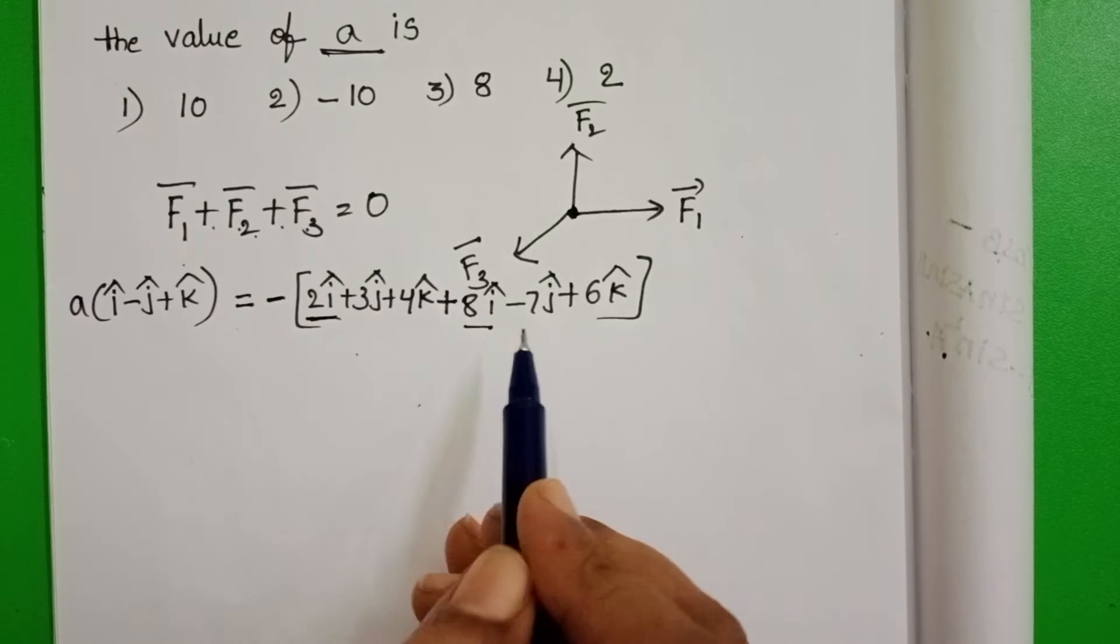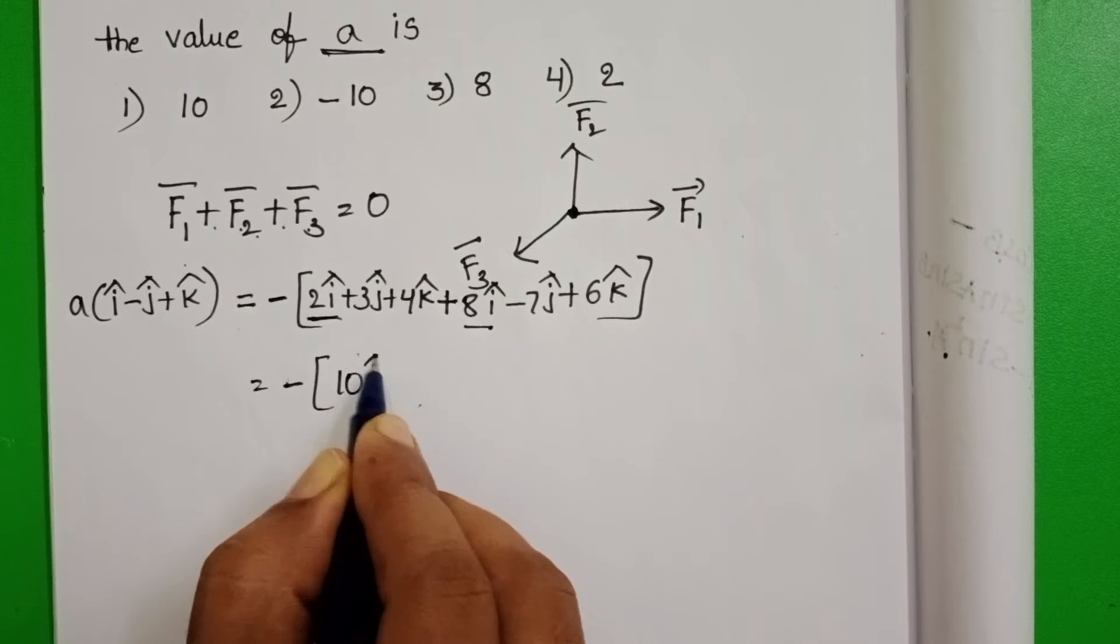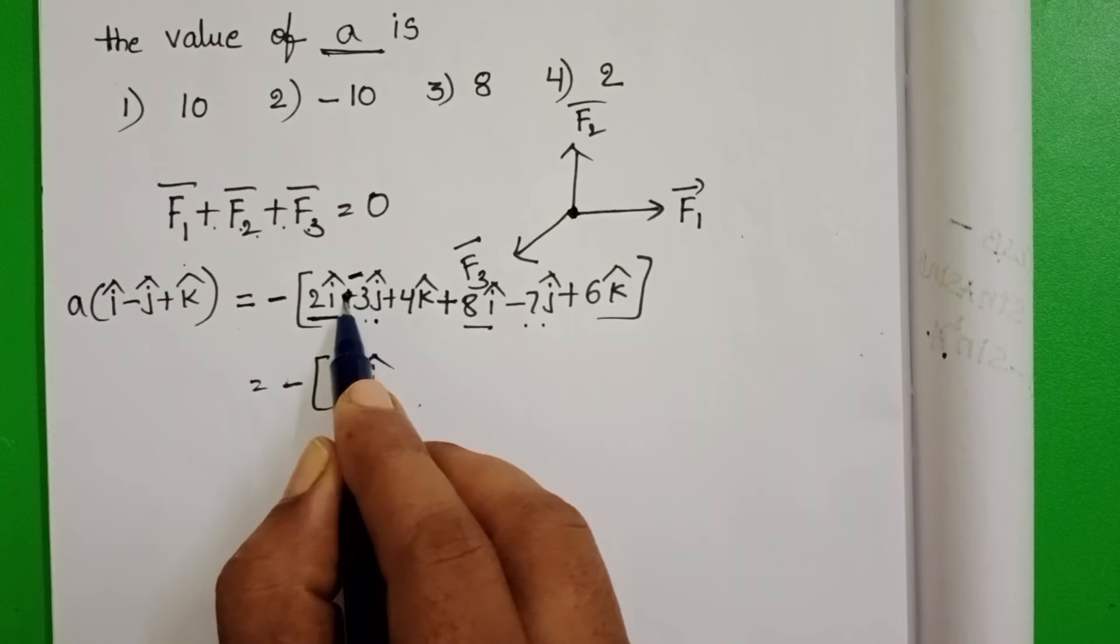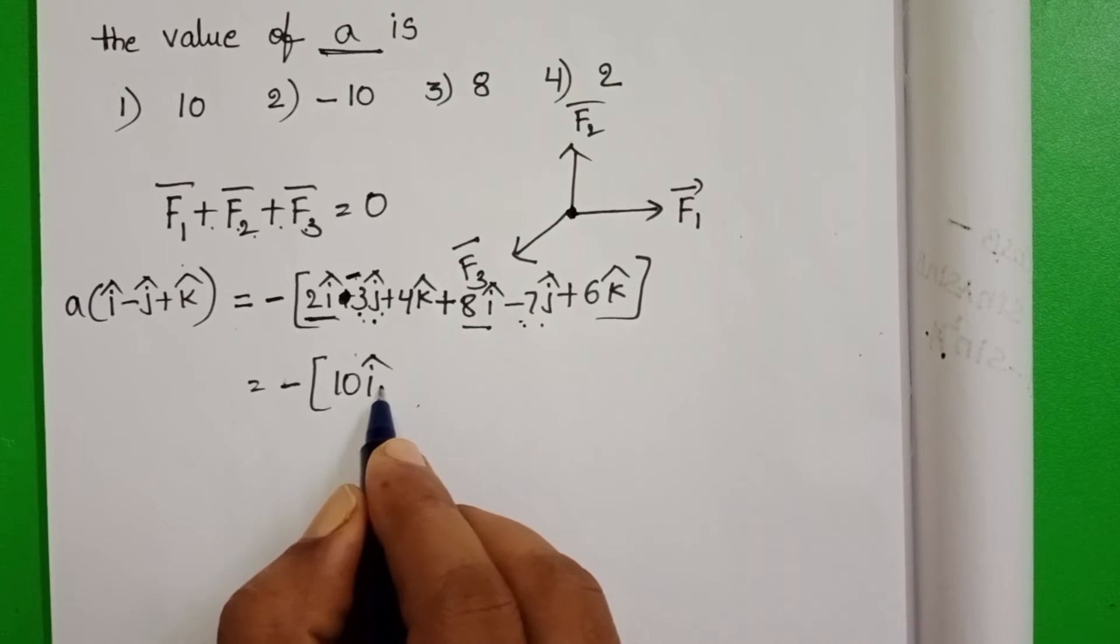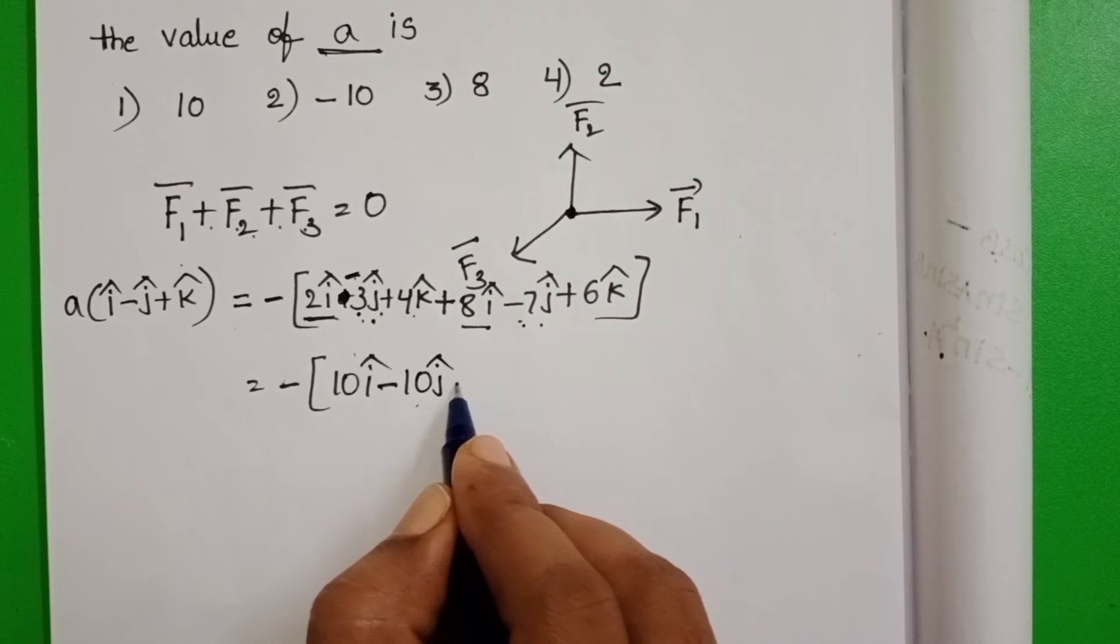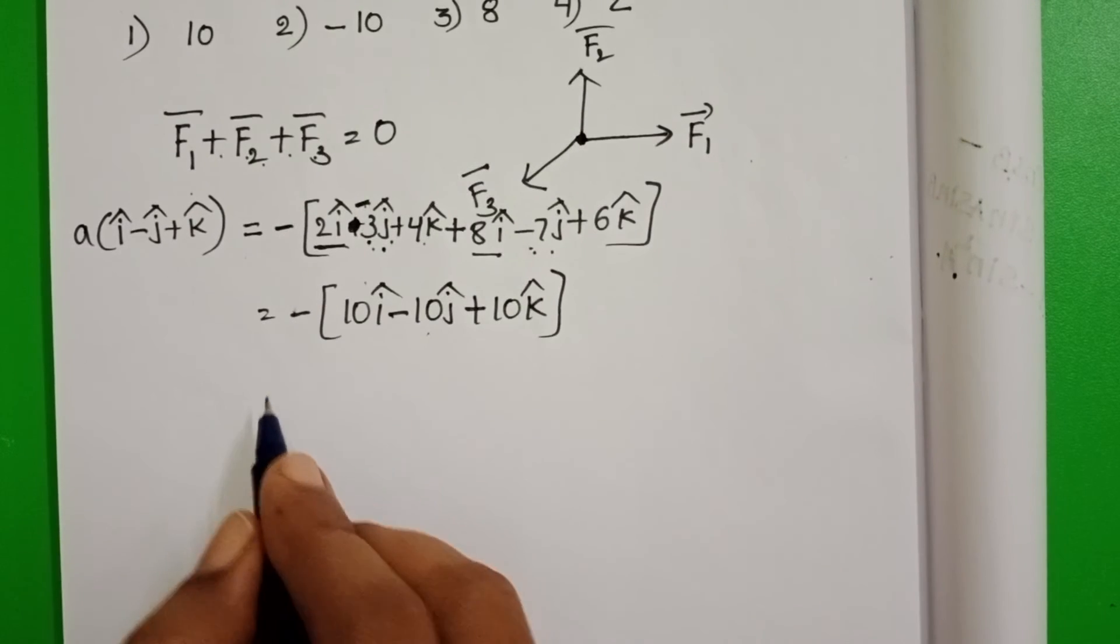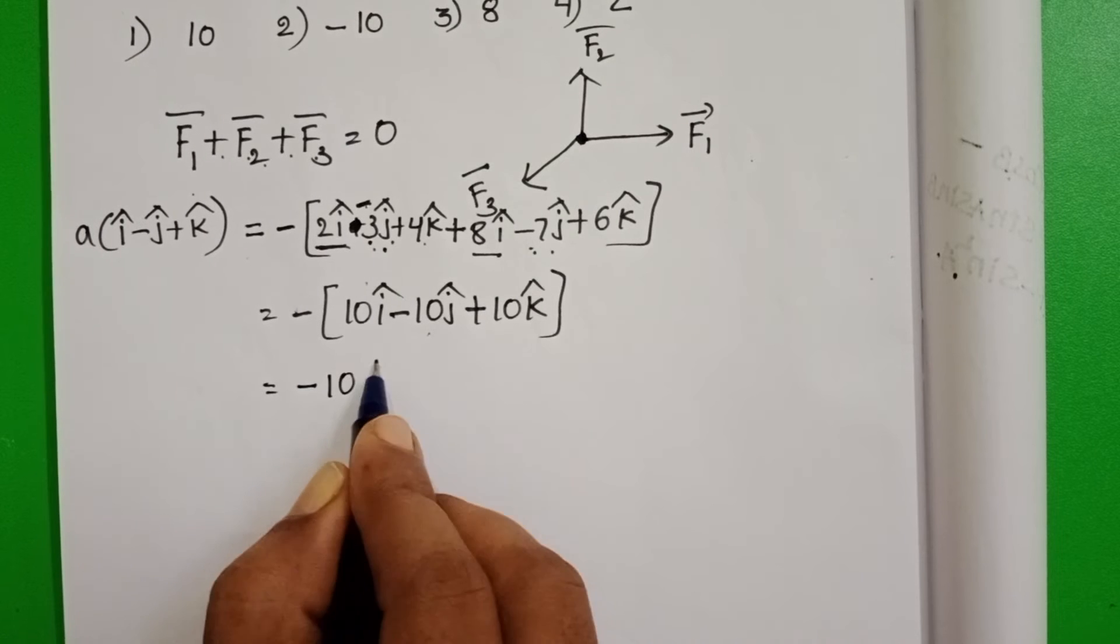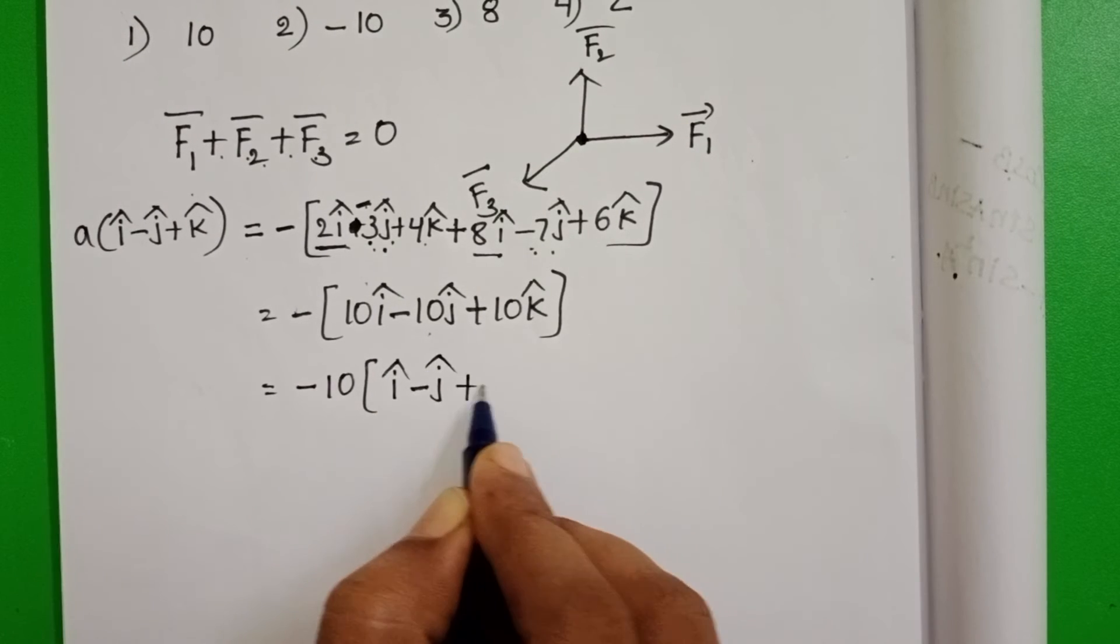2 plus 8 gives 10i cap. This is a minus sign. Minus 3j cap minus 7j cap equals minus 10j cap. Plus 4 plus 6 gives plus 10k cap. Taking 10 common: minus 10 times (i cap minus j cap plus k cap).